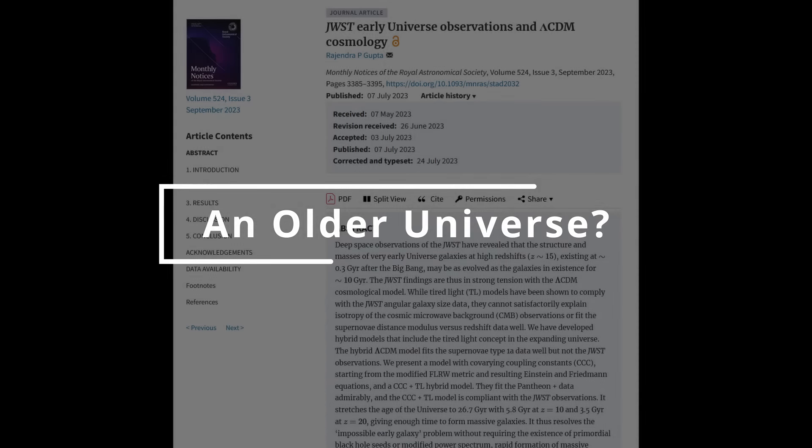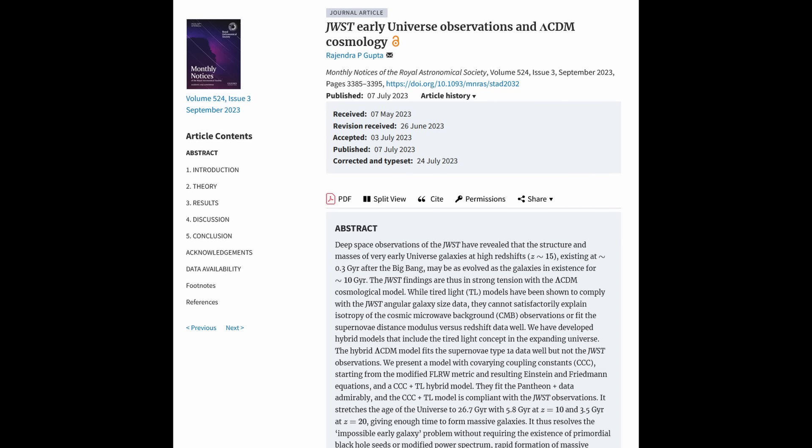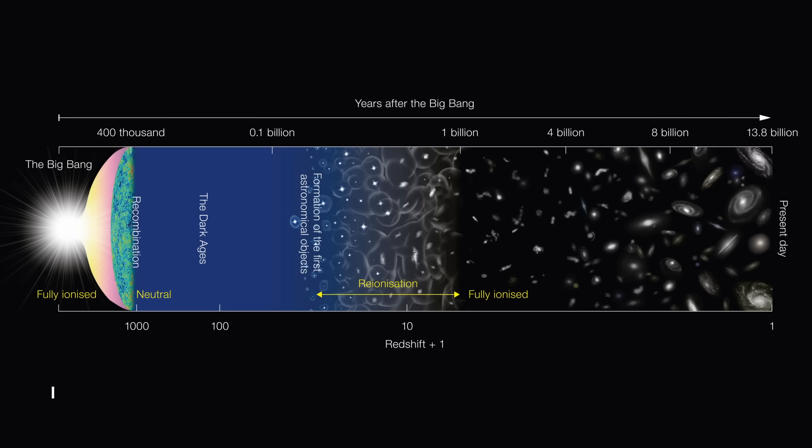In 2023, Rajendra Gupta, an adjunct professor of physics at the University of Ottawa, made waves with a paper challenging the prevailing understanding of the universe's age. Gupta suggested that the universe might be 26.7 billion years old, nearly double the current accepted age. The determination of the age of the universe relies heavily on the interpretation of redshift observed from distant celestial objects.